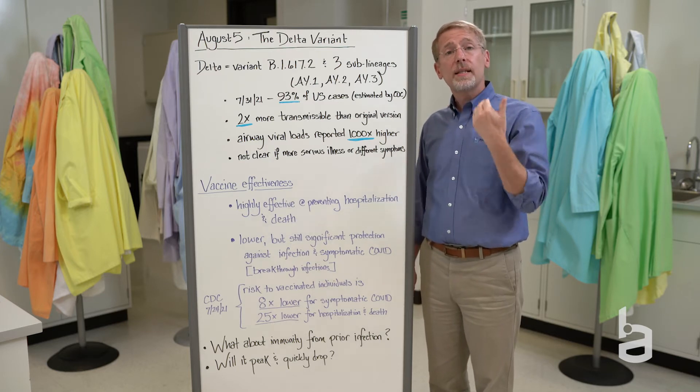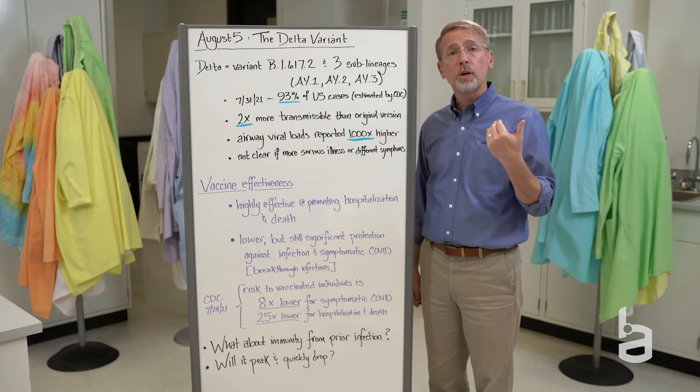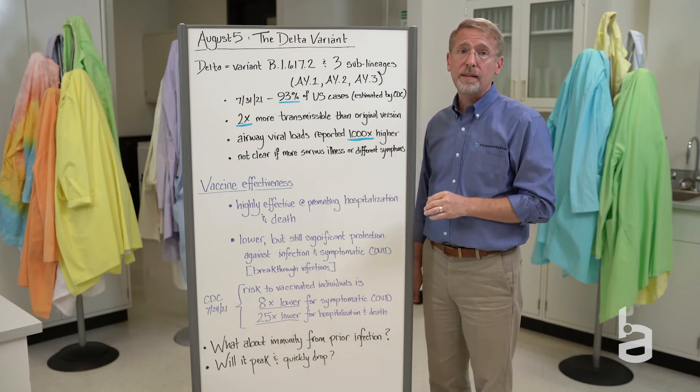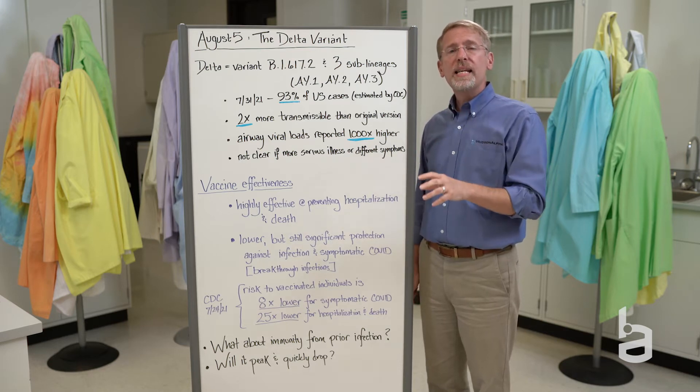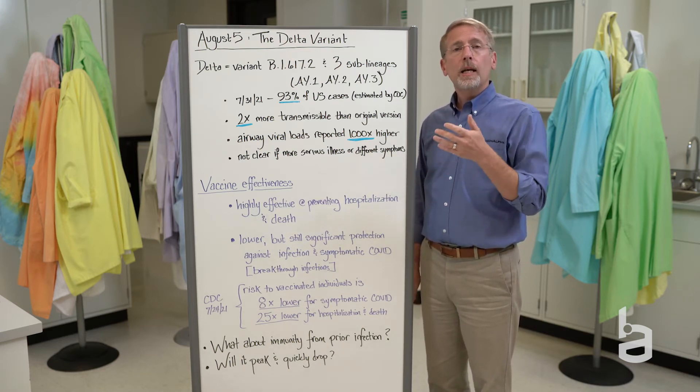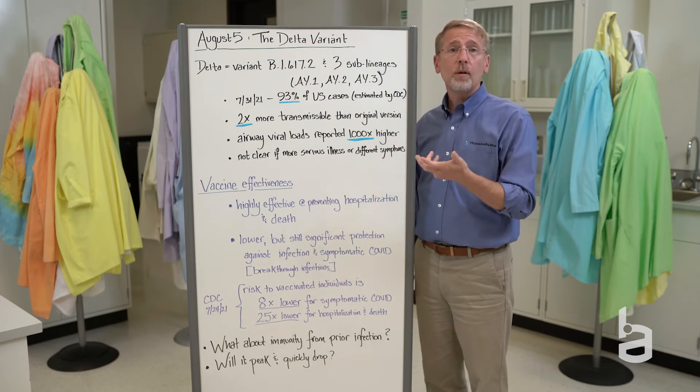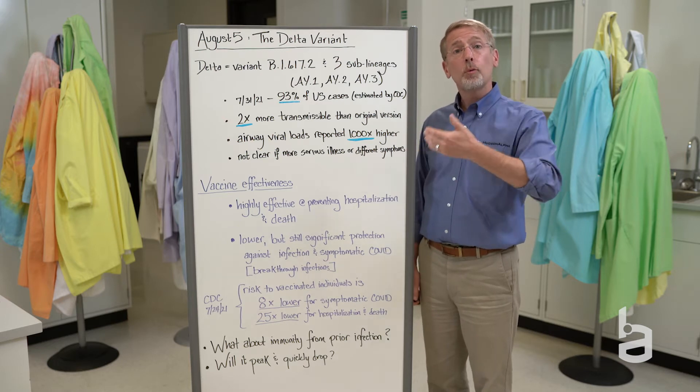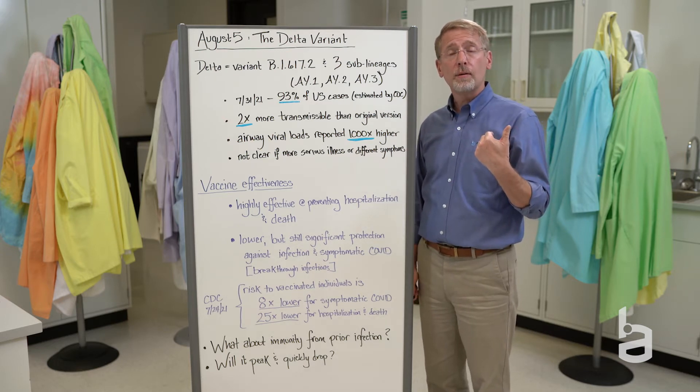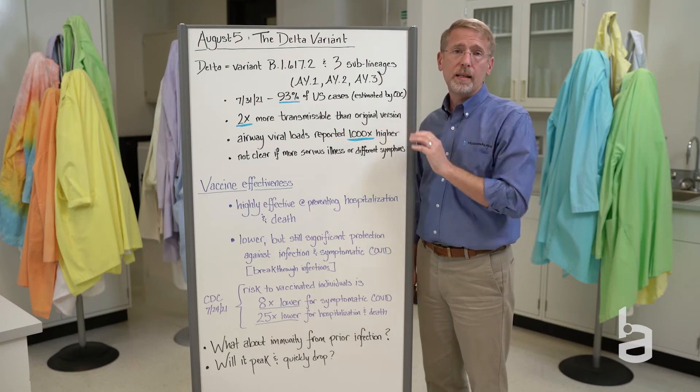We've seen it as the dominant version in other countries. For example, earlier this summer in the United Kingdom, earlier this spring in India, where it was first identified. Why do we see it achieving dominance over the other variants? It likely has to do with the specific combination of genetic mutations that are found in the Delta variant. Some of which we've seen in previous versions of viral variants, some of which are new or specifically unique to Delta.